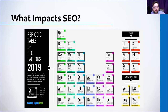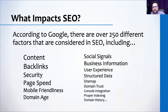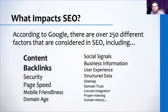What impacts SEO? There are like 200 different factors — content, backlinks, security, page speed, mobile friendliness, domain age, and more. This can seem overwhelming, and it's why SEO seems like it's more for IT people and web developers than communicators. But two of the most important pieces are content and backlinks. Content is very much a communicator's role — writing the things on the page. Backlinks, which we'll get into, are in many ways a digital evolution of PR.